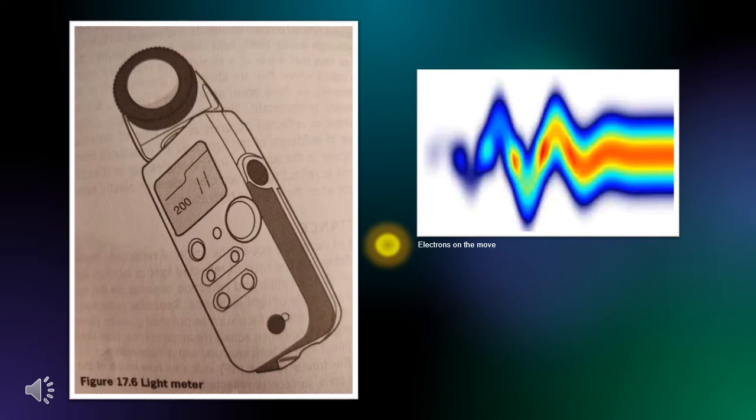This is even possible because light causes electrons to move. The moving electrons move faster at higher temperatures, causing the intensity of radiation to increase.